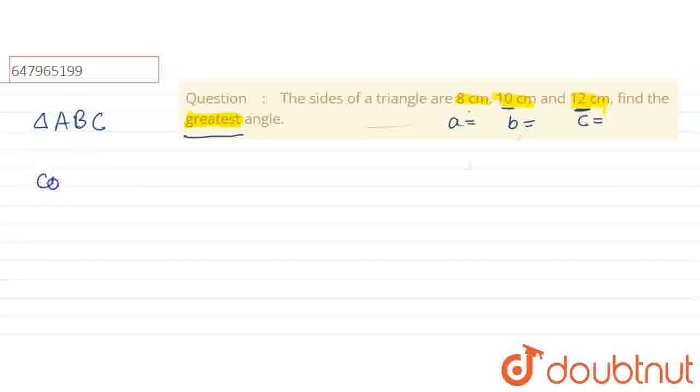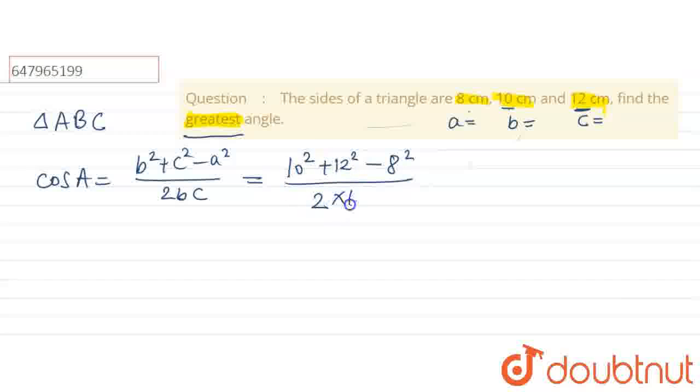So first, let's find the values. So, cos A, we can write b squared plus c squared, this is the formula, minus a squared by 2bc. So putting the values, then 10 squared, 12 squared minus 8 squared by 2 multiplied by 10 and 12, then 240.